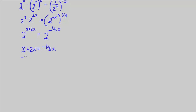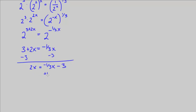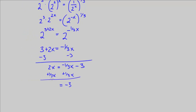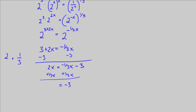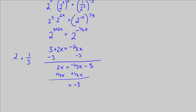So let's subtract 3 from both sides: that gives 2x equal to negative 1 third x minus 3. We want to get like terms together, so let's add 1 third x to both sides. Those cancel out, so we're left with negative 3 on the right and 2x plus 1 third x on the left. These are like terms, so we're going to add 2 plus 1 third, and I'm going to do a little work bubble.